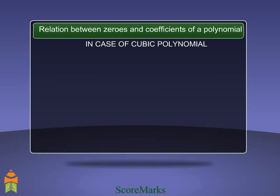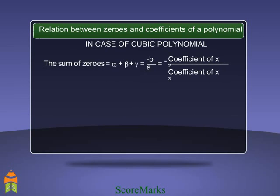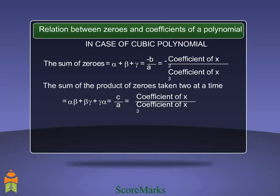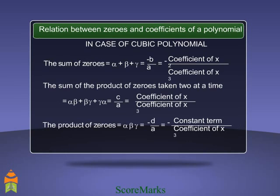In the case of a cubic polynomial, let ax³ + bx² + cx + d be the cubic polynomial, and let alpha, beta, and gamma be its zeros. The sum of zeros is equal to minus the coefficient of x squared upon the coefficient of x cubed. The sum of the product of zeros taken two at a time is equal to the coefficient of x upon the coefficient of x cubed. The product of zeros is equal to minus the constant term upon the coefficient of x cubed.